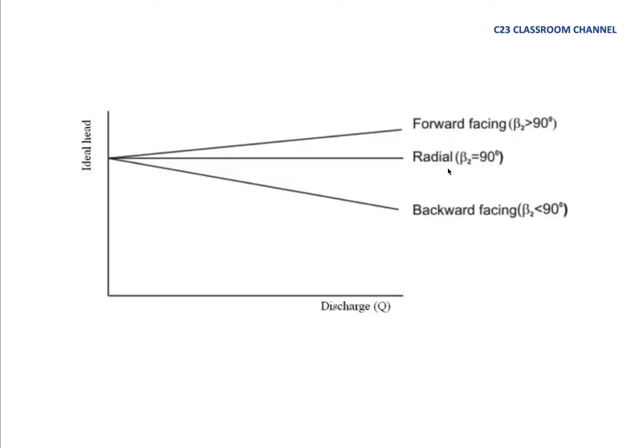Why is the blade type important? Because blade angle will give you different curves. If we have a curve of ideal head and discharge, we find that if we use backward facing, as we increase the discharge, the ideal head—the capability of that pump to transfer water from low to high level—will decrease. For radial, it doesn't significantly change, but for forward blade, if we increase the discharge or flow rate inside the pump, the ideal head can increase.